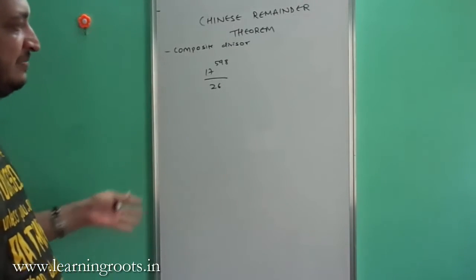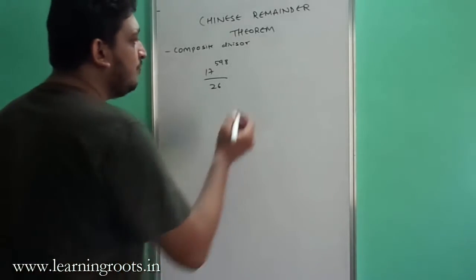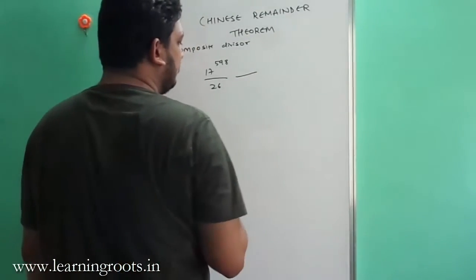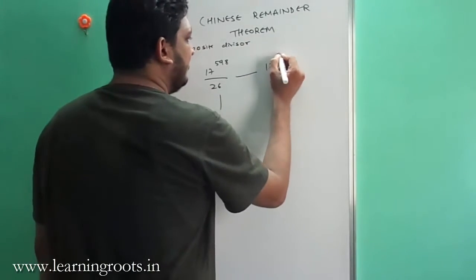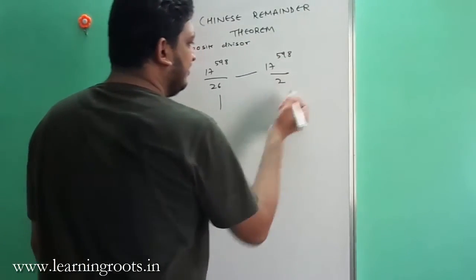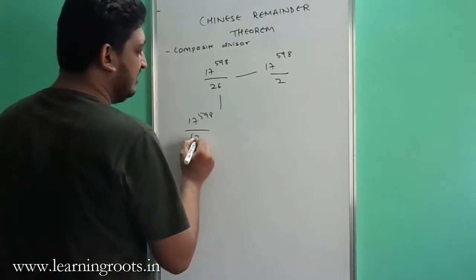As we explained in the previous video, we will split 26 as 13 and 2. So we will split this into two different parts. Let these two parts be represented like this: 17 raised to 598 mod 2 will be the first part and 17 raised to 598 mod 13 will be the second part.